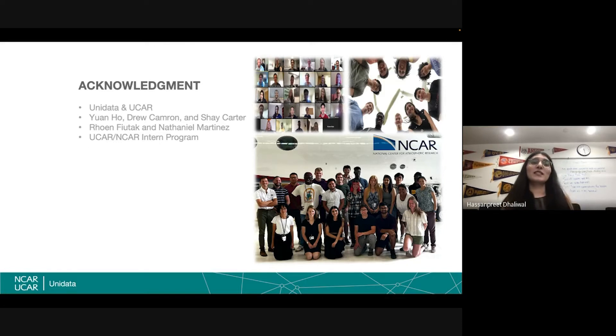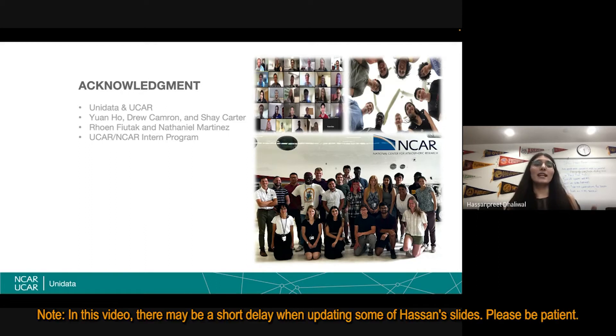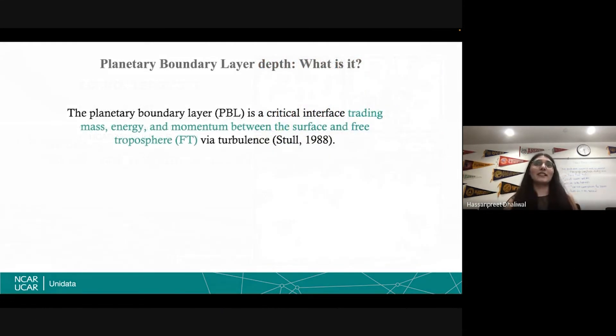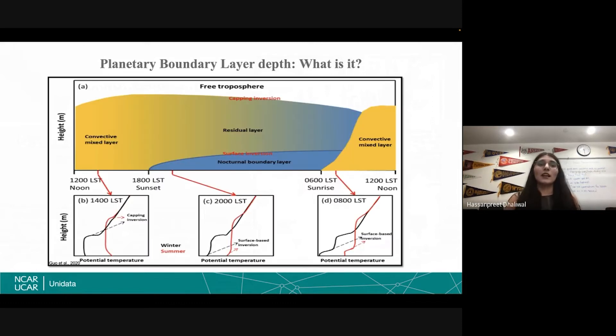Diving right into the subject of my research, which is planetary boundary layer depth. It's defined as the critical interface that trades mass, energy, and momentum between the surface and free troposphere. The boundary layer is the volume of air which is in direct contact with the surface. Sun comes up, heats up the surface, and this heat is transported to the rest of the atmosphere through sensible heat flux. This sensible heat flux direct impacts are felt inside the atmospheric boundary layer. As you can see in this qualitative picture, we are concerned with the yellow shaded portion. It can range from a few hundred meters to a few kilometers, particularly two to three kilometers.